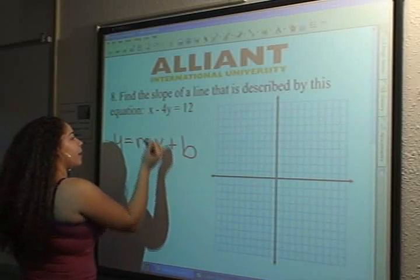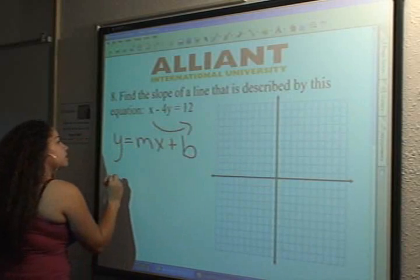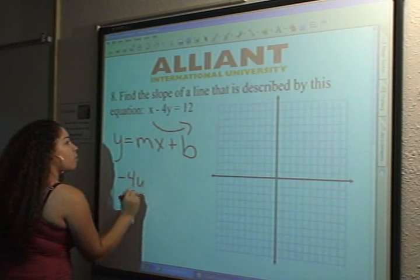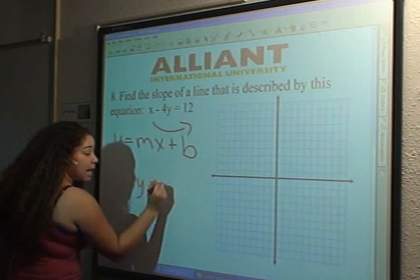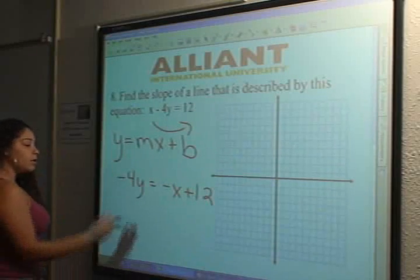Let's go ahead and bring the x over. So we'll be subtracting it. So you're left with negative 4y is equal to negative x plus 12. Now we can go ahead and divide.